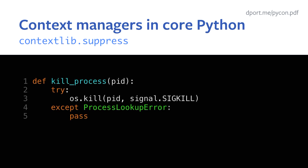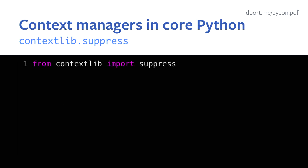Let's look at our first example of a context manager in core Python. This code currently does not use a context manager. We have a function called kill_process — it takes in a process ID and tries to kill it with SIGKILL as the signal. If the process can't be found, we just do nothing — the process is already gone. In my opinion, that's a pretty verbose way to just say 'accept this error, do nothing'. Inside contextlib, there's a context manager called suppress. contextlib has all kinds of goodies — I highly recommend checking out the docs. Suppress was only added in 3.6.